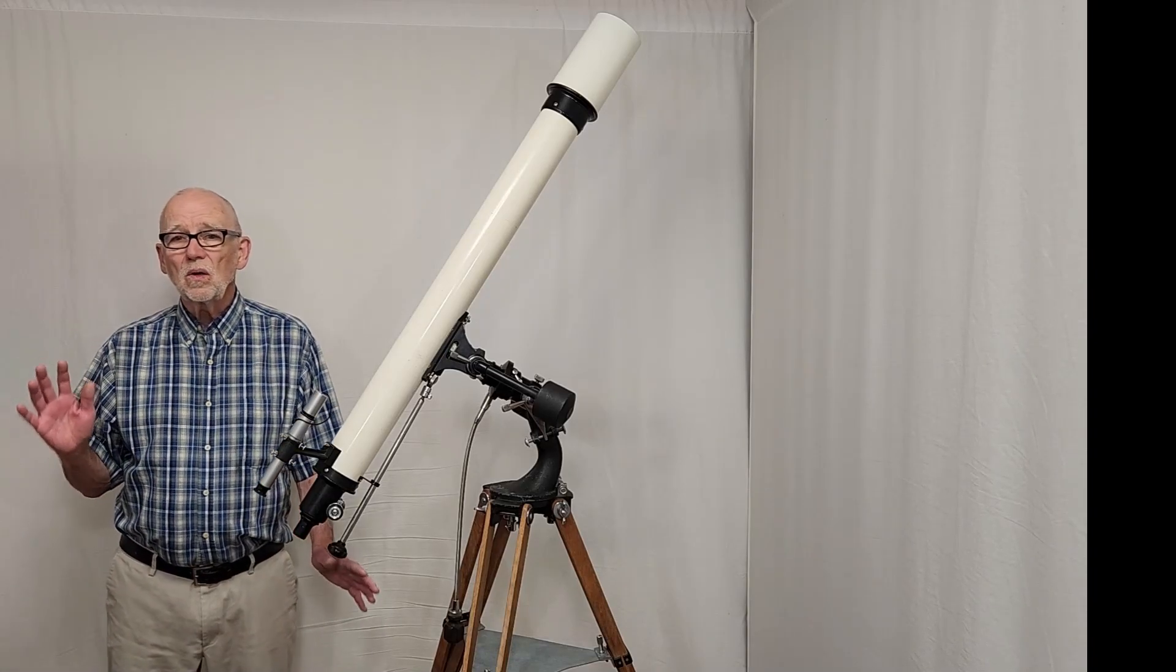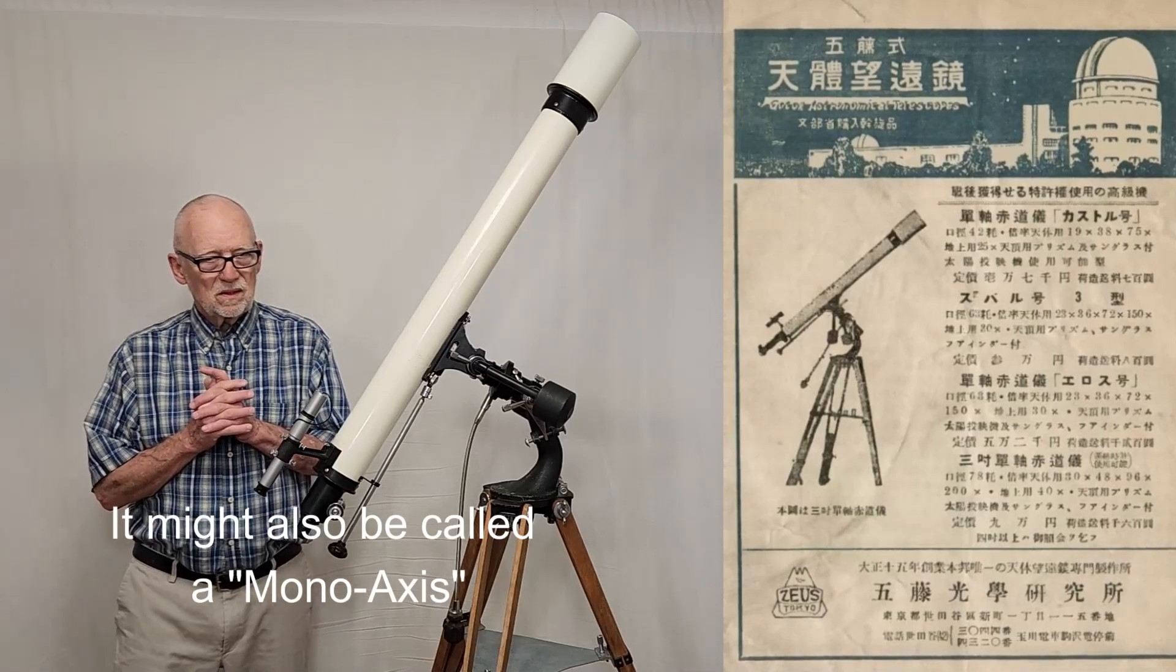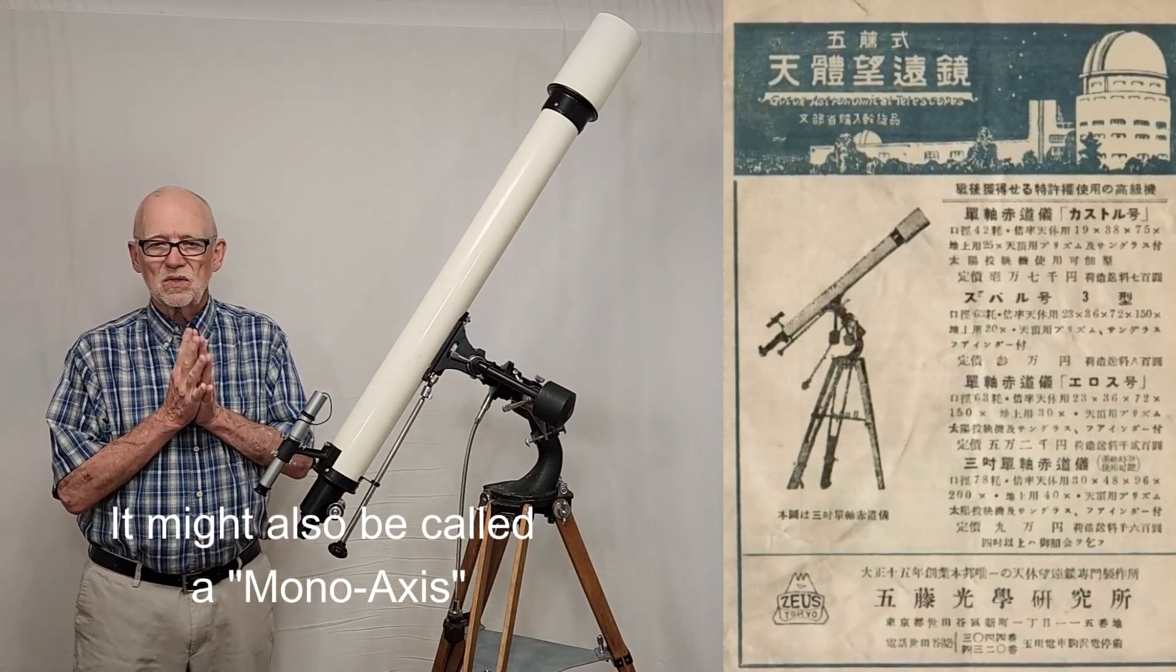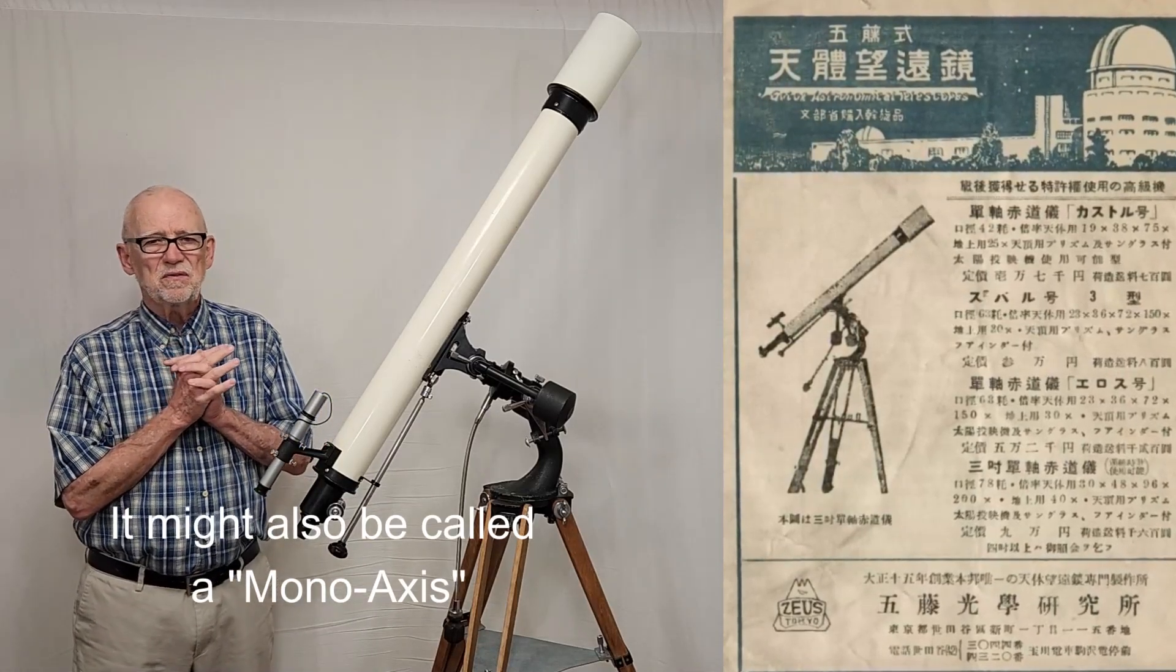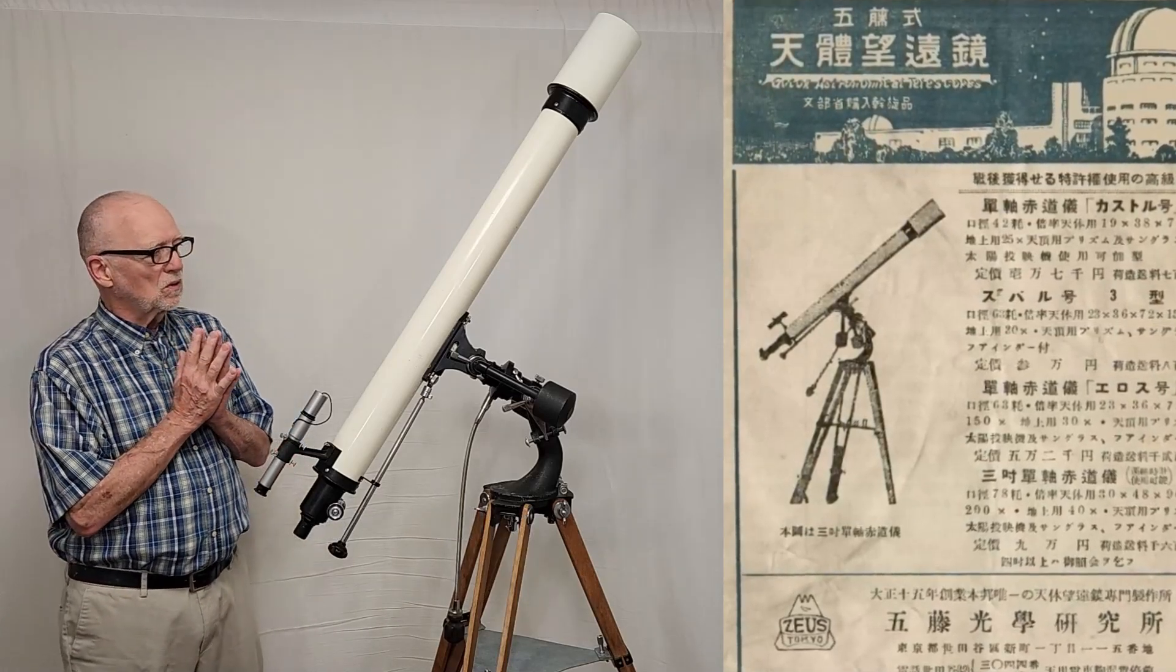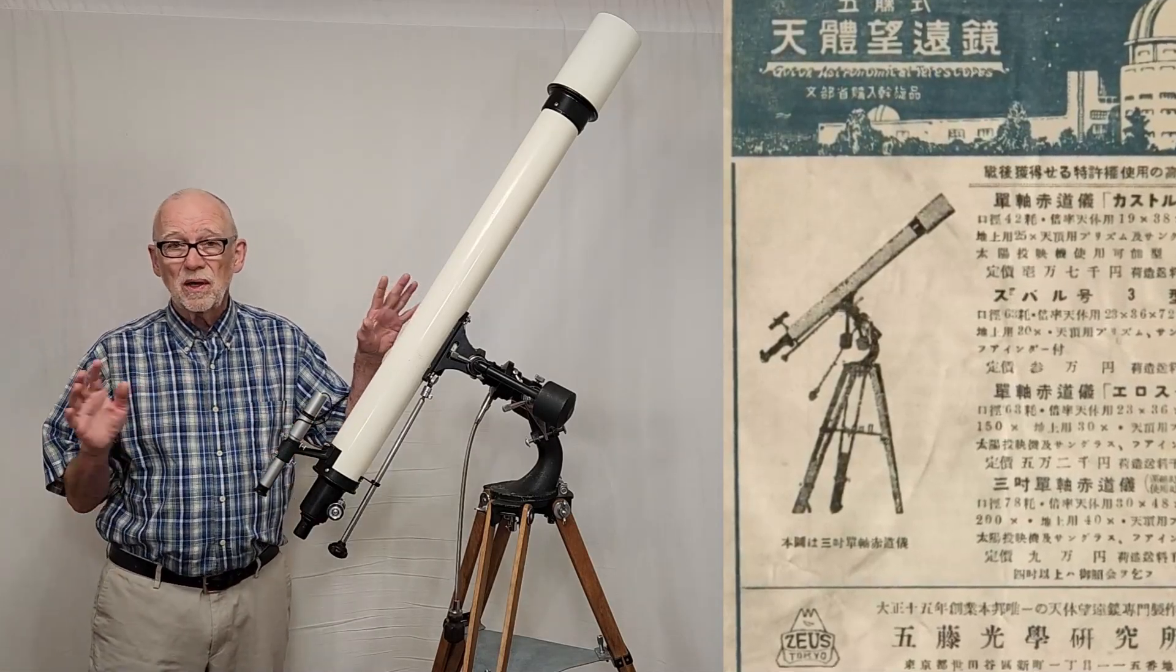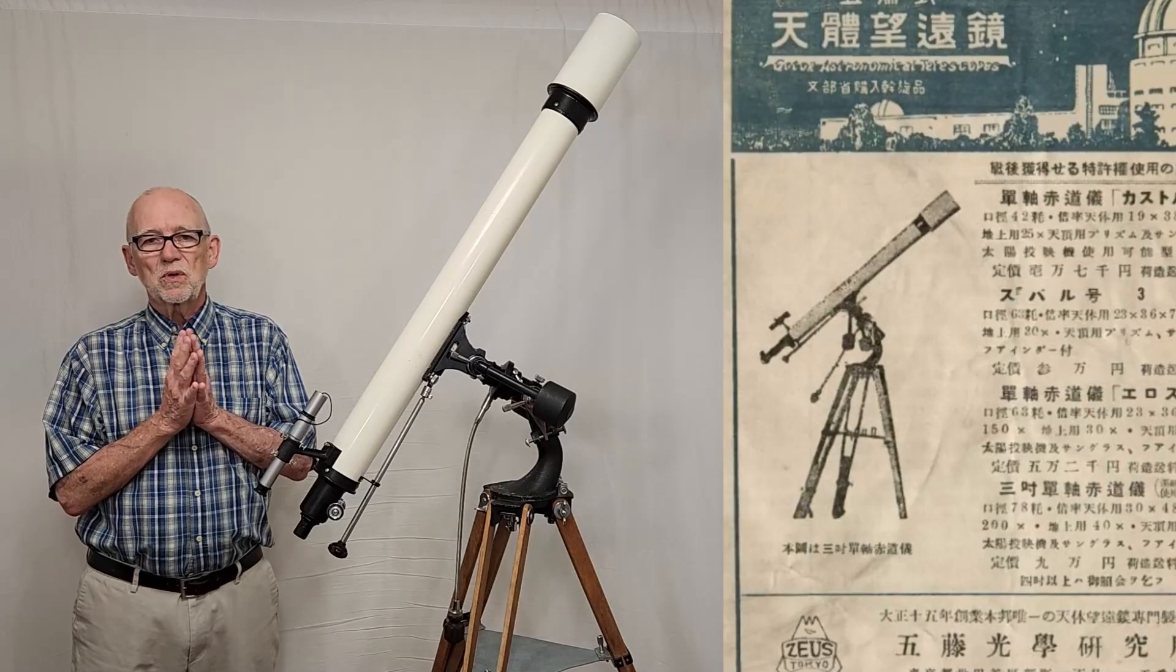This is the Gotoh Kogaku Single Axis 78, a 78 millimeter telescope dating from the 1950s, about 1952, according to Stu Squires, who is an expert on Gotohs. And by the way, this scope was loaned to me by Stu. Thank you very much, I appreciate the loan.